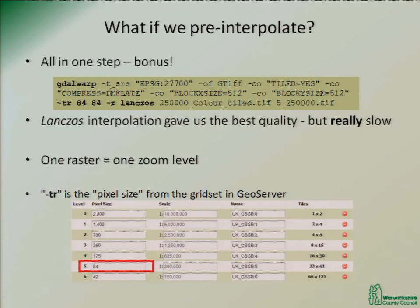One raster is one zoom level, so you end up with ten rasters — which is fine, it's only a little more disk space but not actually that much. There's a parameter you need: the TR in GDAL warp, which resizes it.